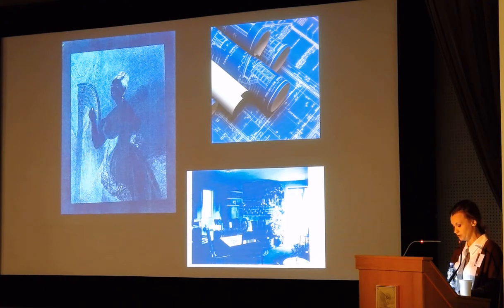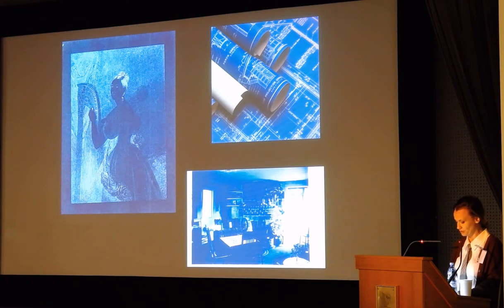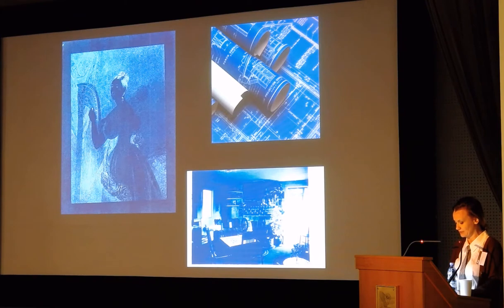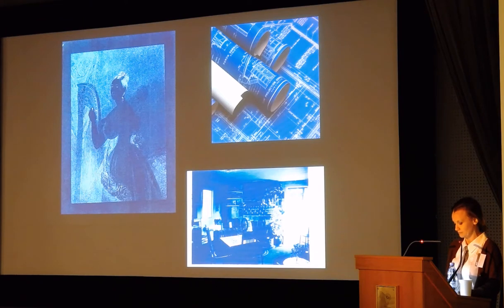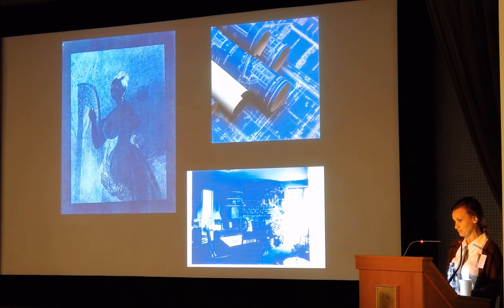In the 1860s, cyanotype became widely popular as a process, especially for getting control prints from negatives. Some expensive photographic processes based on silver and platinum were also used. Natural scientists employed the process from 1870 until the middle of the 20th century.